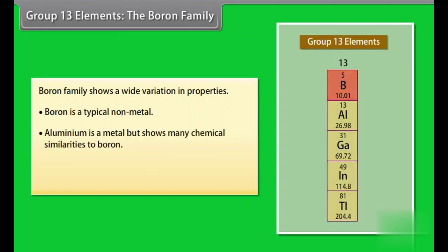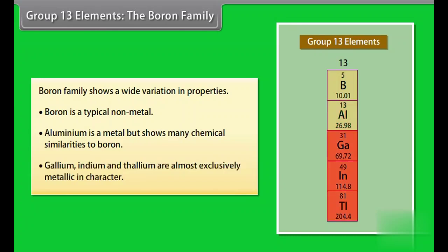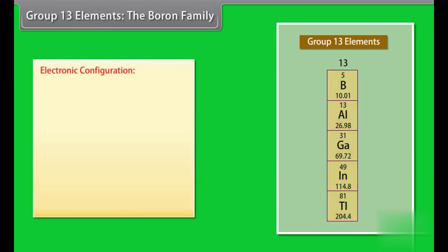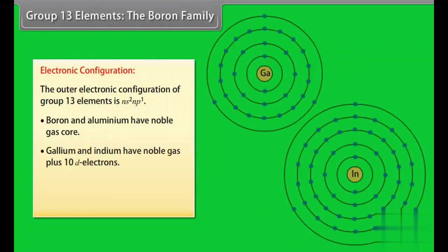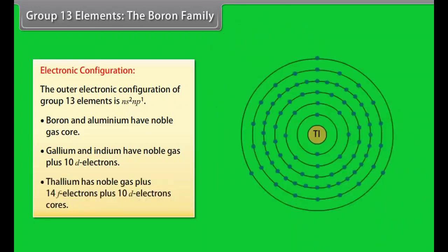Group 13 elements, the boron family. Boron family shows a wide variation in properties. Boron is a typical non-metal. Aluminium is a metal but shows many chemical similarities to boron. Gallium, indium and thallium are almost exclusively metallic in character. Electronic configuration: the outer electronic configuration of group 13 elements is NS2NP1. Boron and aluminium have noble gas core. Gallium and indium have noble gas plus 10D electrons. Thallium has noble gas plus 14F electrons plus 10D electrons cores.